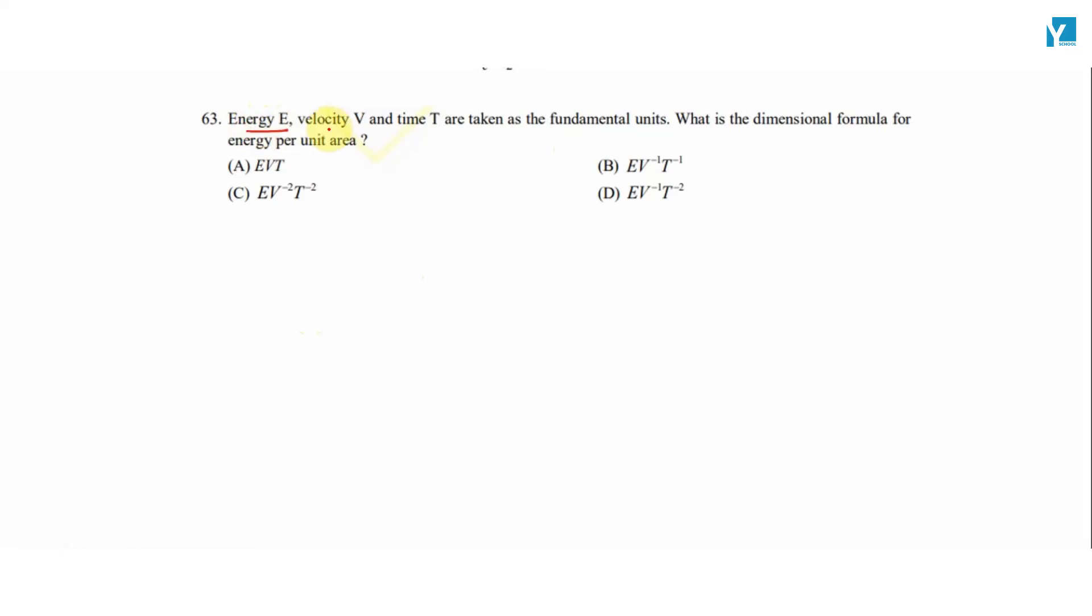Energy E, velocity V, and time T are taken as the fundamental units. What is the dimensional formula for energy per unit area?